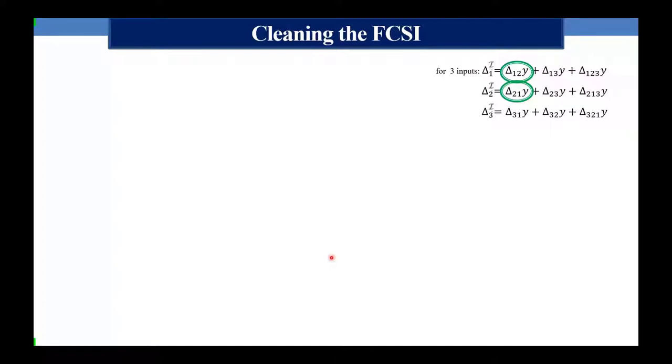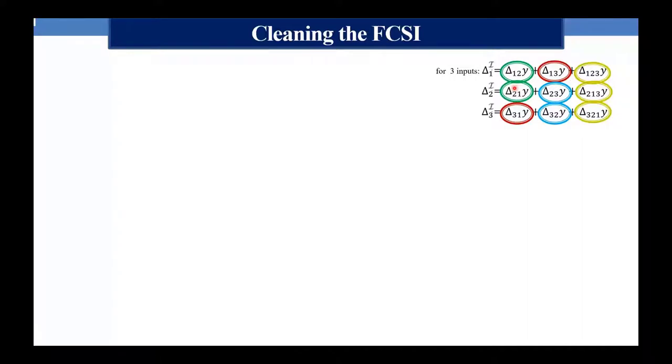Occorre effettuare un'operazione di depurazione, di pulizia. Considerando il caso di tre parametri, l'interazione tra il parametro 1 e il parametro 2 viene considerata sia per calcolare l'effetto di interazione complessivo del parametro alfa_1 con gli altri parametri, sia per quello di alfa_2: viene utilizzata due volte, creando una duplicazione. Lo stesso vale per le interazioni 1-3 e 2-3, e la terna compare tre volte. Nei modelli più grandi le quaterne compaiono quattro volte, eccetera.